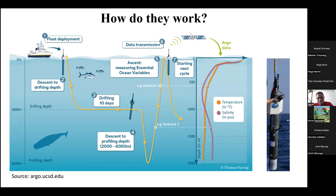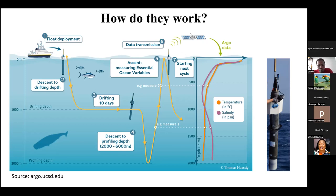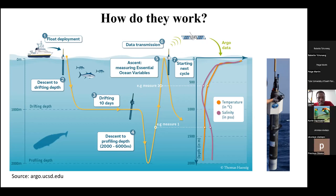Once the float is deployed, it's already pre-programmed to behave in a certain way. It descends to a certain depth which has been pre-programmed, then at a particular depth it can stay there drifting with ocean currents for a number of days. It then drifts to its final depth, and when ascending to the ocean surface it collects data. Once at the surface it transmits the data.